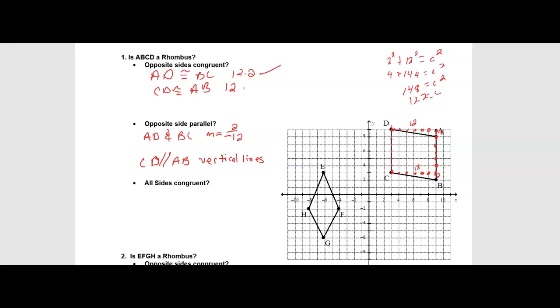So opposite sides are congruent. We show that here. We show that opposite sides are parallel. A, D and B, C have the same slope. And then C, D and A, B have the same slopes because they're vertical lines. In order to be a rhombus, then all sides need to be congruent. If you look up here at the top, we see that they are not. 12.2 is the side of one of the parallelograms, A, B, C, D. That is not equal to the length of the other two sides, which is 12. So since all sides are not congruent, we would say, no, this is not a rhombus.